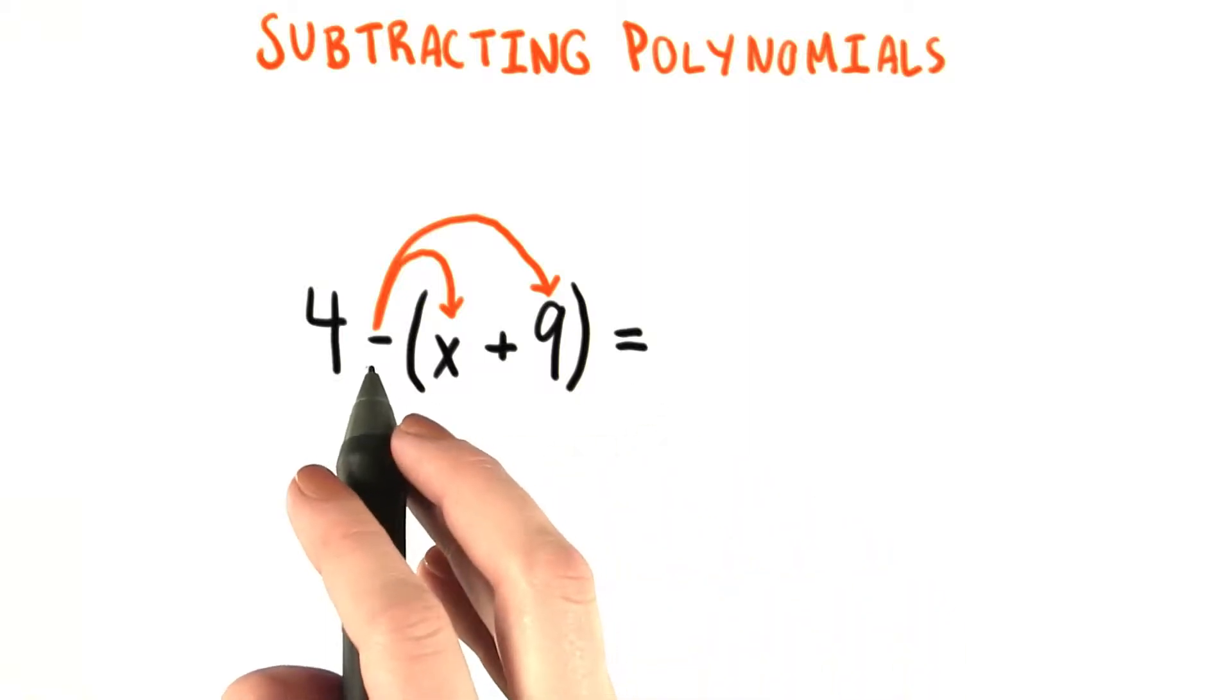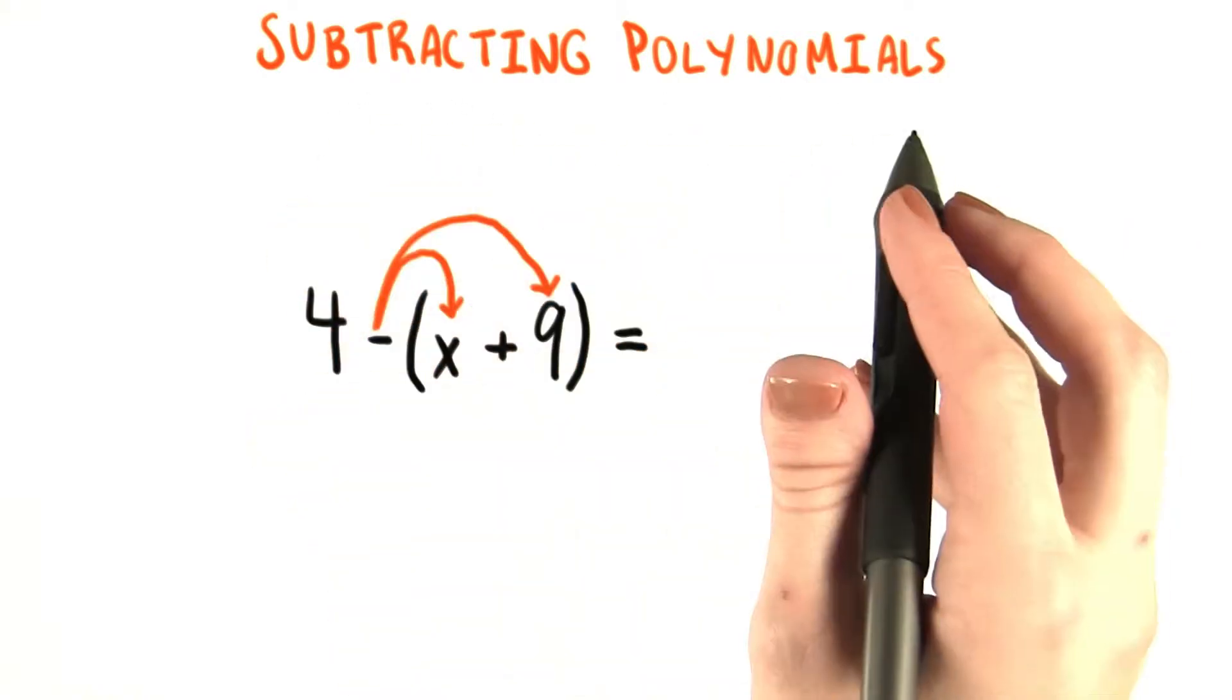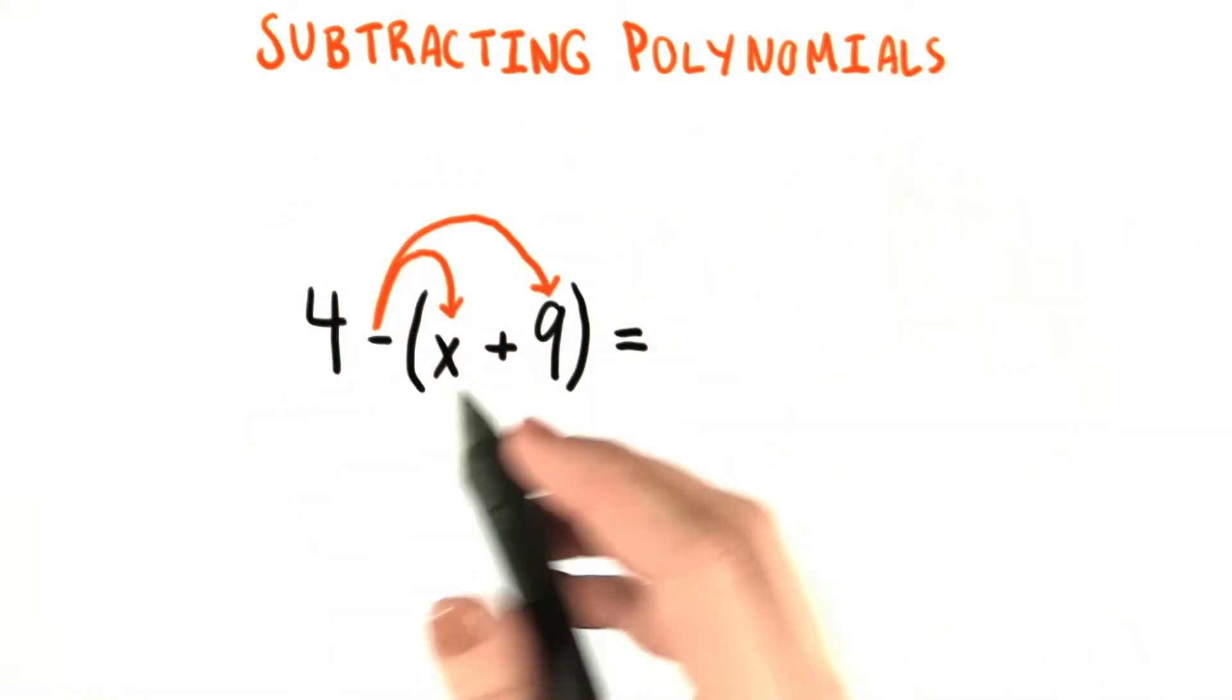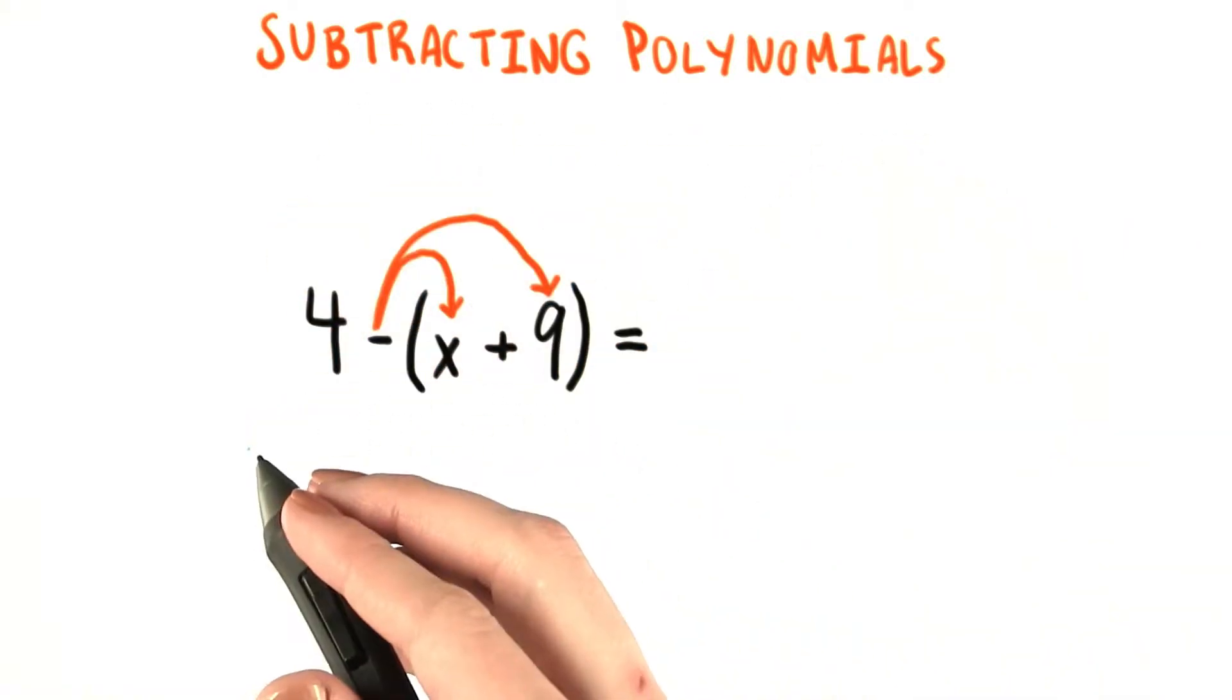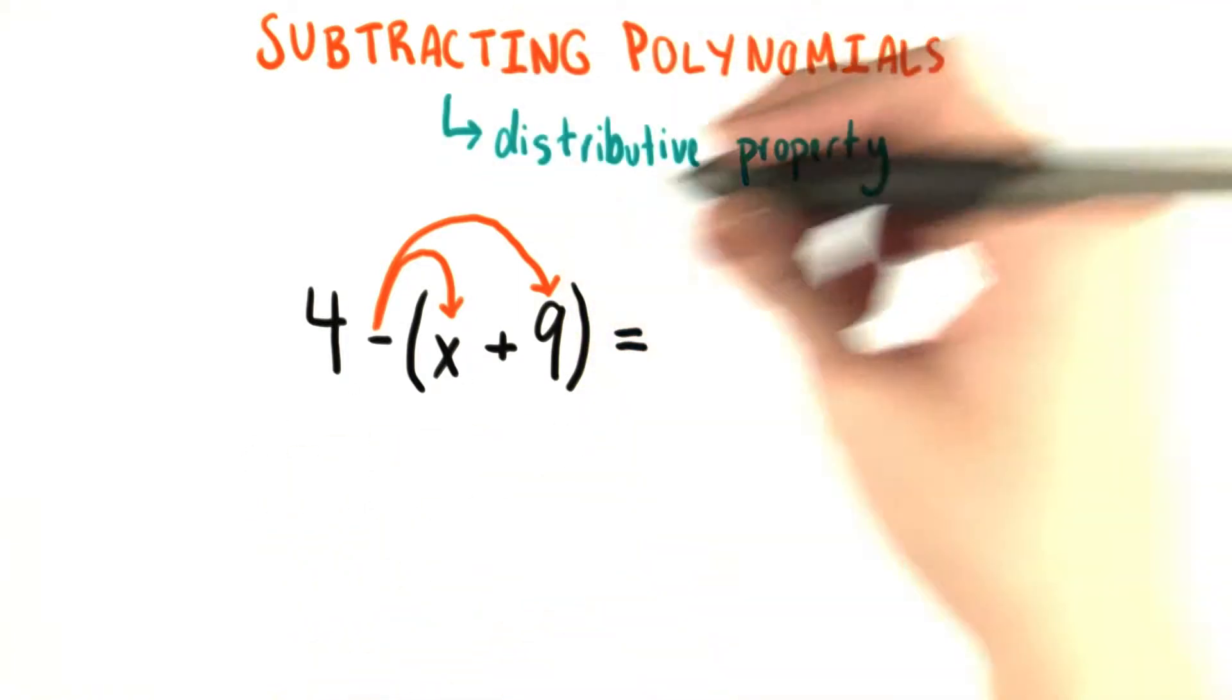So it's pretty straightforward to think about applying the negative sign to both the x and the 9 when we're talking about subtracting expressions from one another. What we're really doing here is using an example of a much broader property, and that property is the distributive property.